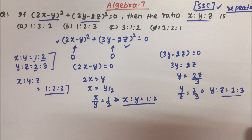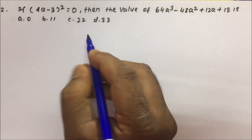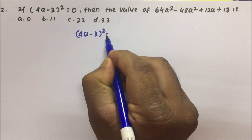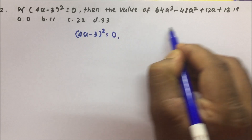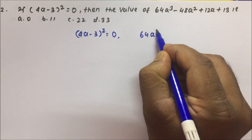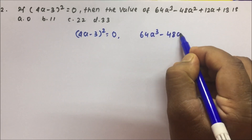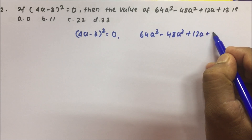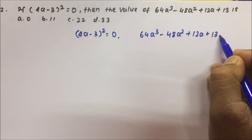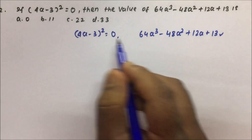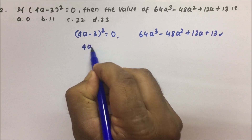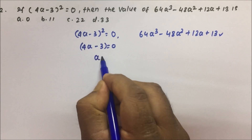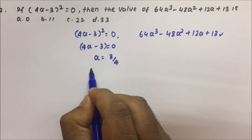Moving towards the next problem — question number 2. If (4a − 3)² = 0, find the value of 64a³ − 48a² + 12a + 13. So from (4a − 3) = 0, a = 3/4.